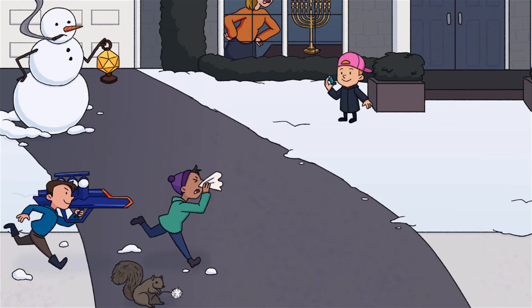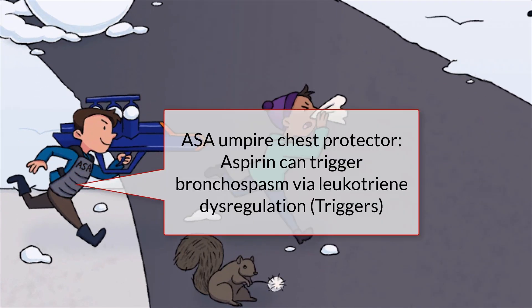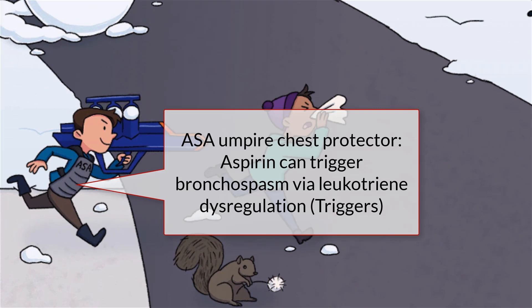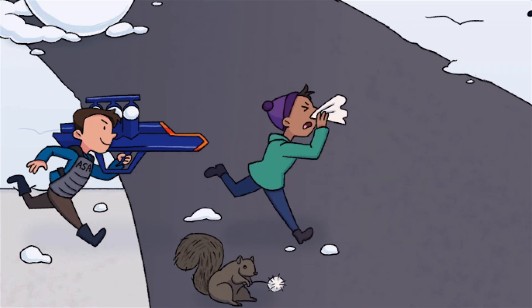Two medications in particular are especially worth asking your patient about: aspirin and beta blockers. Aspirin can trigger bronchoconstriction in asthmatics via leukotriene dysregulation. As a COX inhibitor, aspirin causes increased formation of leukotrienes, a substance implicated in the pathogenesis of bronchospasm. At Sketchy, our recurring symbol for aspirin is the ASA umpire chest protector, this time donned by our snowball launcher-toting kid. He sure came prepared.